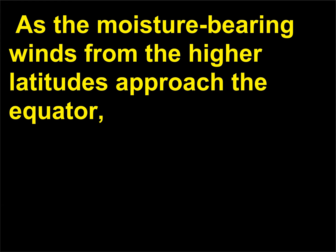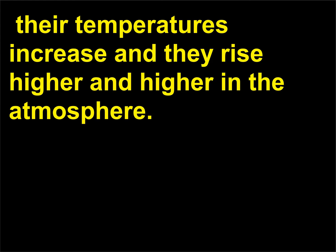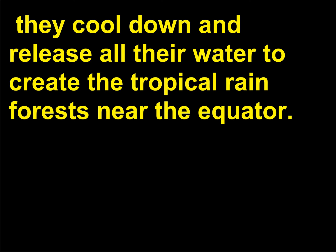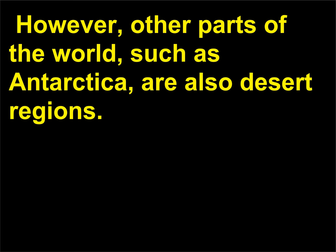As the moisture-bearing winds from the higher latitudes approach the equator, their temperatures increase and they rise higher and higher in the atmosphere. When the winds arrive over the equatorial areas and come in contact with the colder parts of Earth's atmosphere, they cool down and release all their water to create the tropical rainforests near the equator. However, other parts of the world, such as Antarctica, are also desert regions.